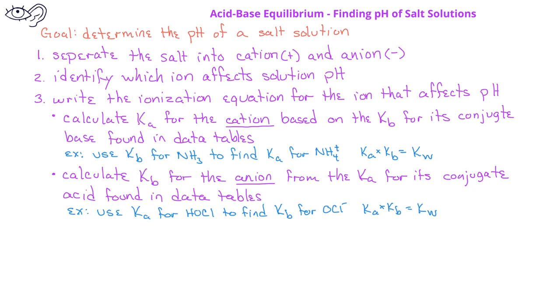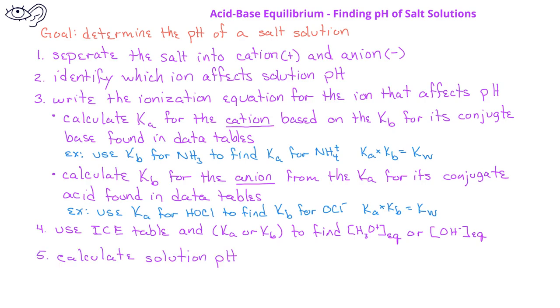After we do this, we'll use an ICE table and either the Ka or Kb value to find the equilibrium concentration of either the hydronium ion or the hydroxide ion. Once we have the equilibrium concentration of one of those two species, we can then calculate the pH of the solution.